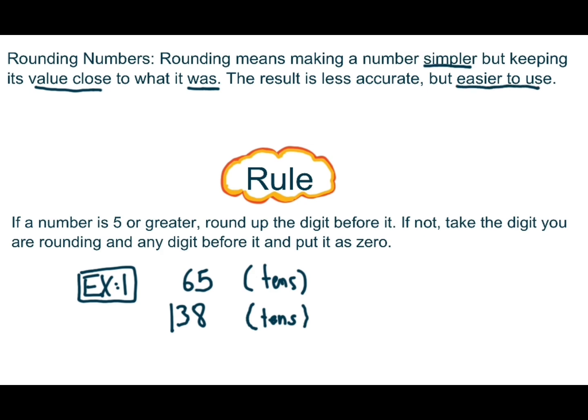If a number is 5 or greater, round up the digit before it. If not, take the digit you are rounding and any digit before it and put it as zero.